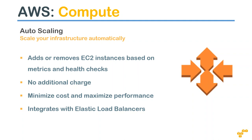If CPU is on average 15% for 10 minutes, reduce one instance. By configuring these rules, the auto scaling service will add and remove servers automatically. This way you don't have to predict capacity in advance. There are no additional charges for auto scaling - it works freely with EC2. Only the underlying EC2 instances are charged per hour or per minute of use. It also integrates with Elastic Load Balancer.